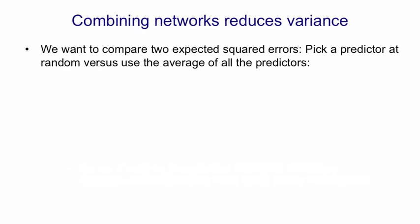Now let's look at the math of what happens when we combine networks. We're going to compare two expected squared errors. The first expected squared error is the one we get if we pick one of the predictors at random and use that for making our predictions. And then what we do is we average over all predictors the error we'd expect to get if we followed that policy.